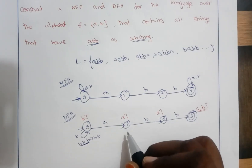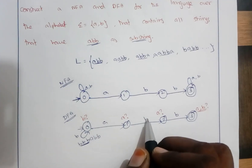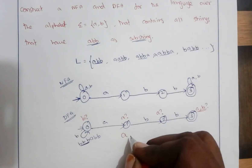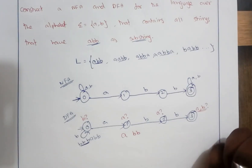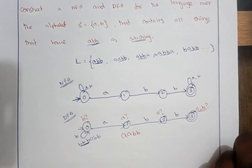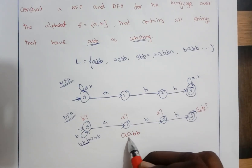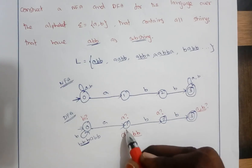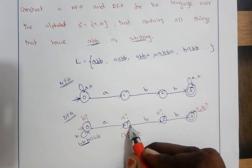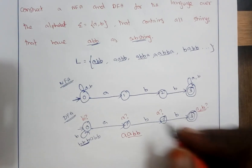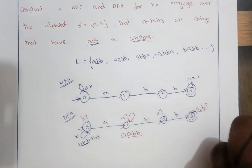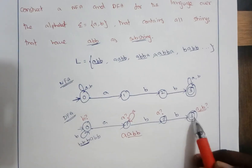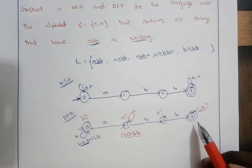In state 1, when the input is B we have a transition. When the input is A, we have to check. State 1 is a place where we have processed one A and are waiting for Bs. If some A occurs here, it doesn't matter — we can take this A and if it is combined with BB, we can accept it. So we can stay in state 1 itself for all As. And if the next two elements are BB, we can reach the final state. So there is a looping condition in state 1 when the input is A, and when the next two elements are B, we reach state 3.